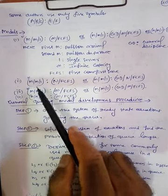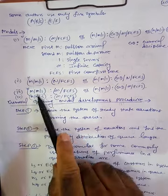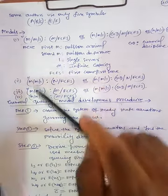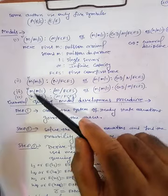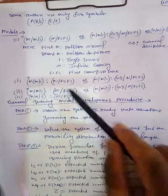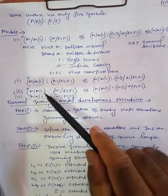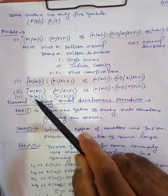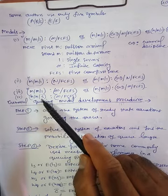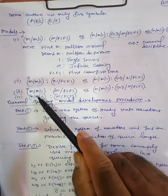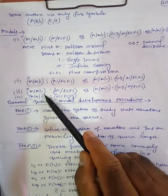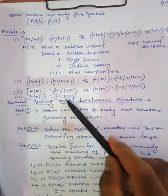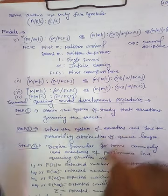Similarly, the third model is almost the same but there will be a little difference, and we will discuss the difference when we discuss that model. The fourth one is MMS — that means Poisson Arrival, Poisson Departure and S numbers of servers are available, Infinite Capacity and First Come First Serve.